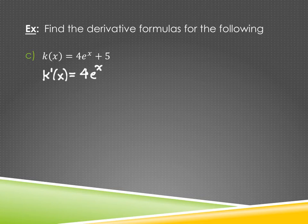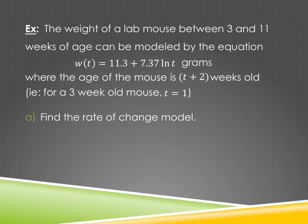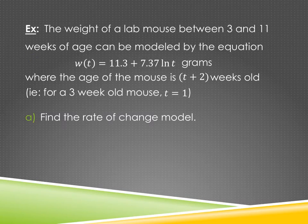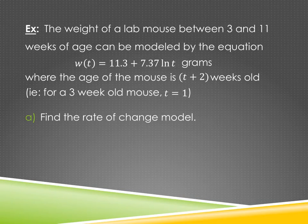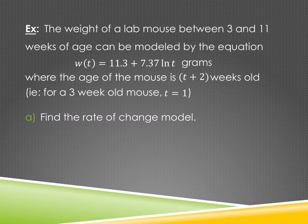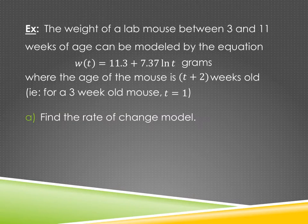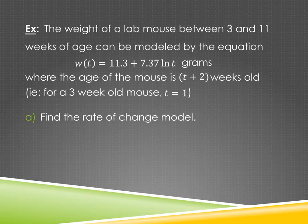And no business class would be complete without an example that's a word problem, would it? No, it definitely wouldn't. So we need one. Here's our one. And we've seen this problem before. Do you remember our lab mouse? You guys remember our lab mouse, don't you? We've seen him twice. Once in class, once in the homework. And then I even talked about him in the homework afterwards when I handed it back. The weight of a lab mouse between 3 and 11 weeks of age can be modeled by the equation W of t equals 11.3 plus 7.37 natural log t grams. And then it has this funny weird alignment thing going on where it says, the age of the mouse is t plus 2 weeks old, i.e. for a 3 week old mouse, t equals 1.